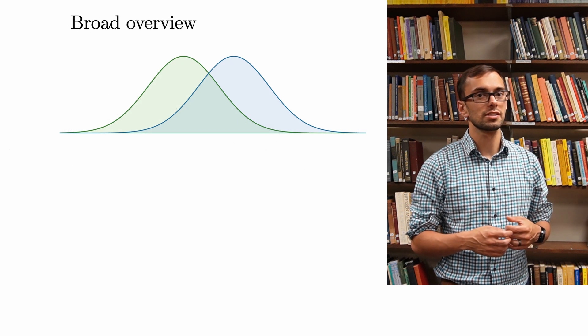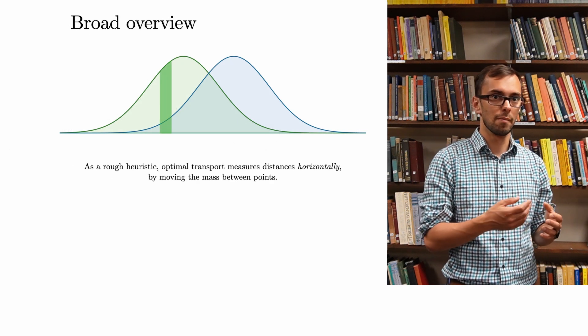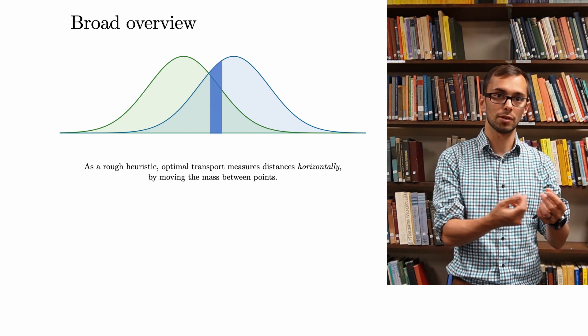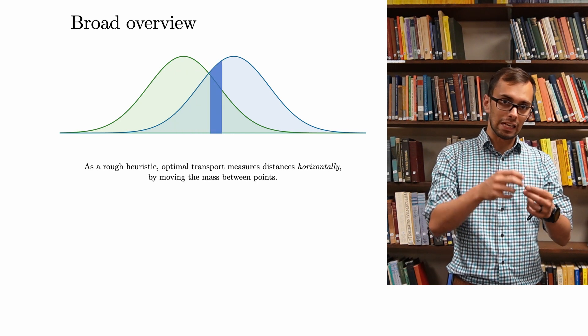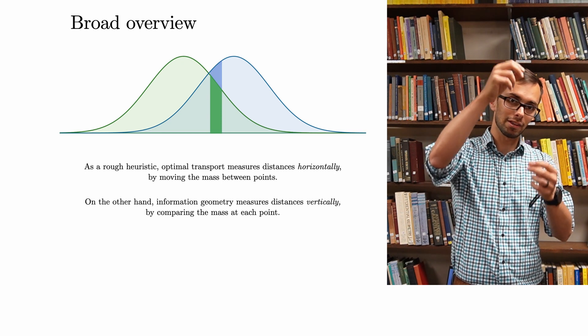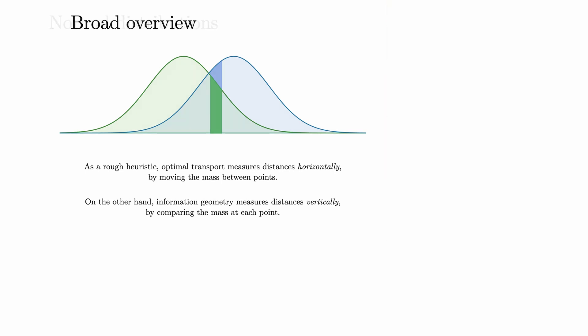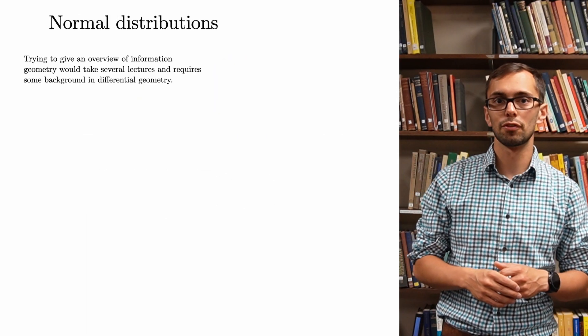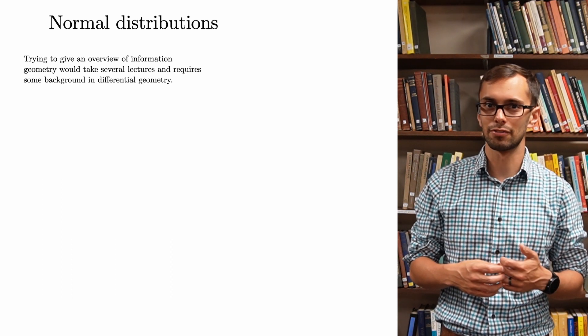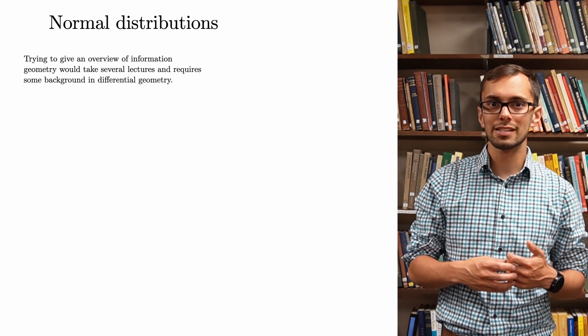To give a rough heuristic, optimal transport measures distances horizontally by moving mass in between points. On the other hand, information geometry measures distances vertically by comparing the mass at each point. Trying to give an overview of information geometry would take several lectures and require some background in differential geometry. Instead, let's consider an example to give some intuition for how this works.